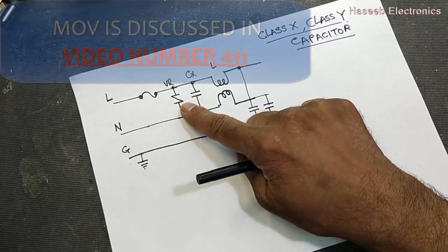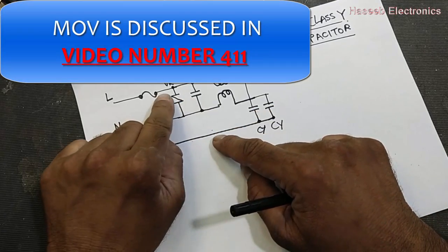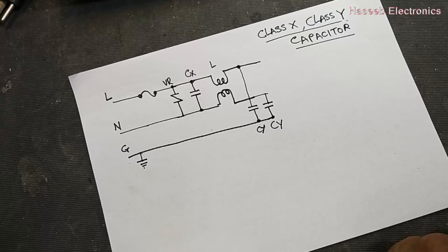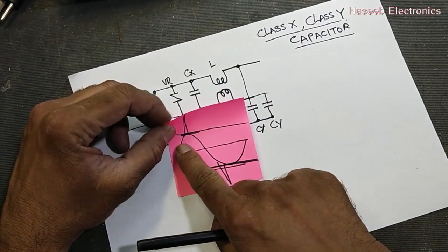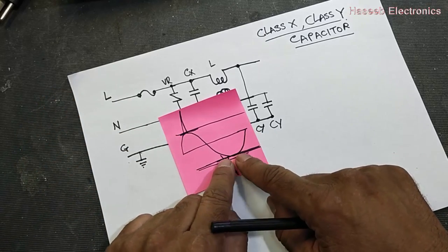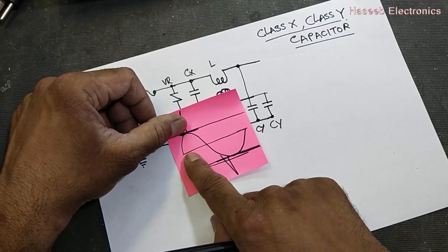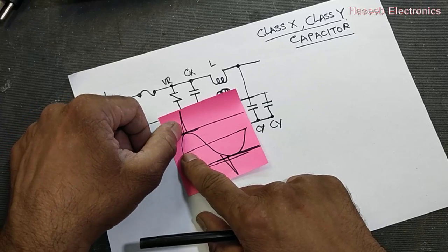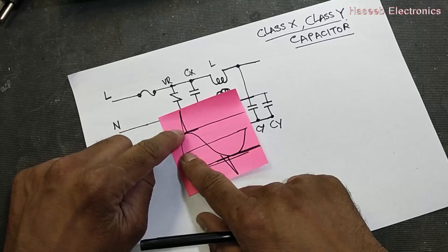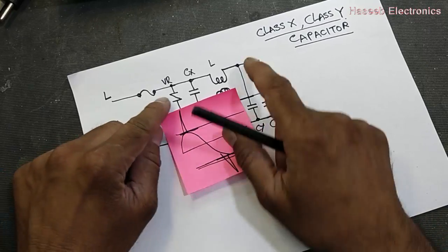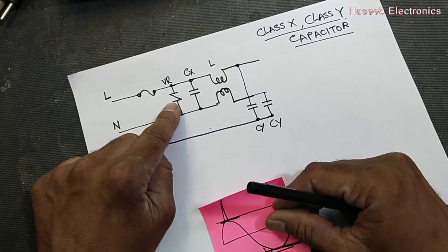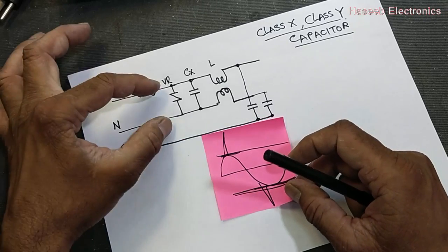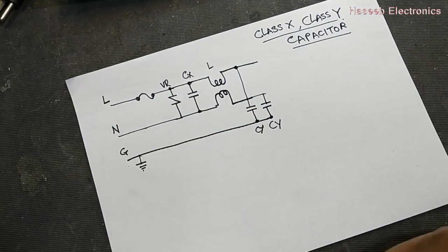In our last video I discussed the varistor MOV, which is used to clamp spikes in the voltage. The VR represents our line voltage — from zero to peak voltage and negative peak. Any time we have a high voltage spike in the line or neutral, the varistor MOV will remove this extra voltage and give a regulated voltage to the circuit. But this capacitor has a different behavior.